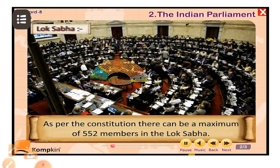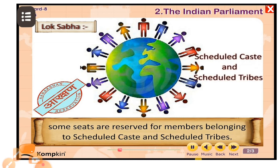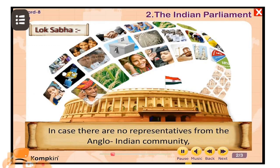To ensure representation to all sections of society, some seats are reserved for members belonging to Scheduled Caste and Scheduled Tribe. In case there are no representatives from the Anglo-Indian community, the president can appoint two members from this community to the Lok Sabha.